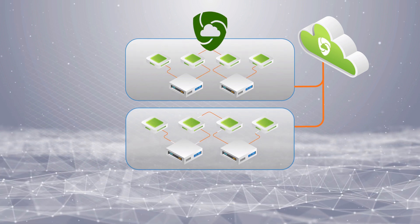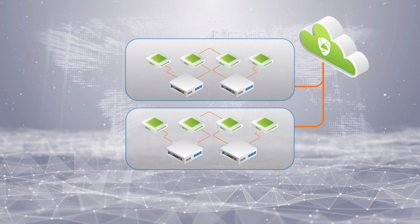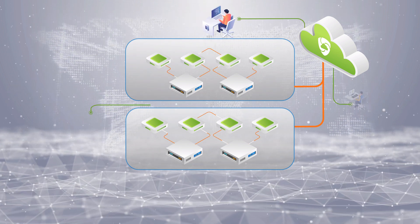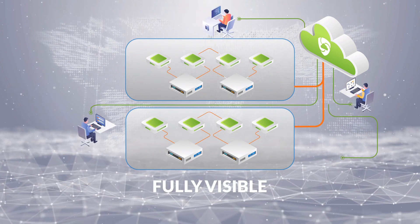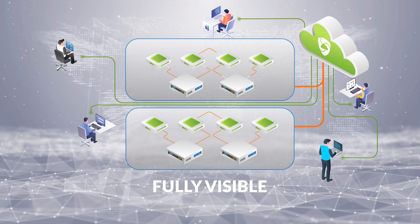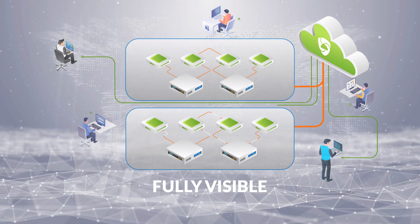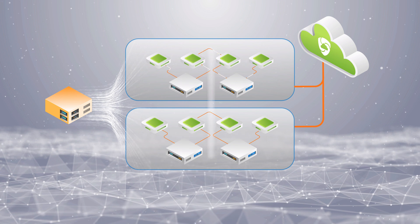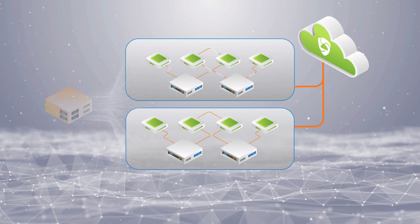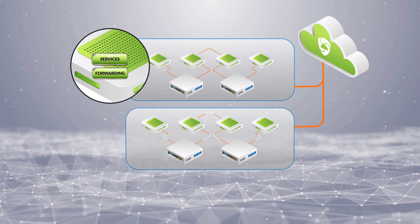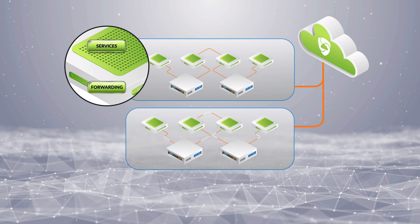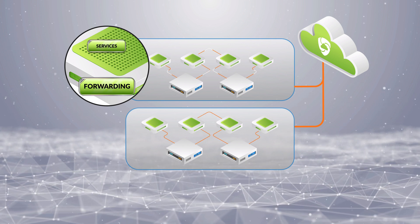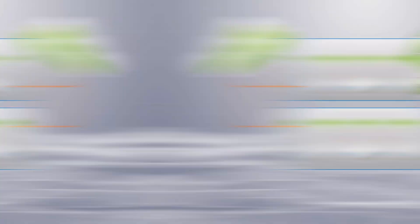And together with Juniper Security Director Cloud, no matter where your data resides or where your users are, you will always have full visibility of who is accessing what from where. And whenever you add a new firewall engine, your security policy is rolled out automatically. By decoupling the forwarding layer and services layer, you can scale forwarding for performance and services independently.